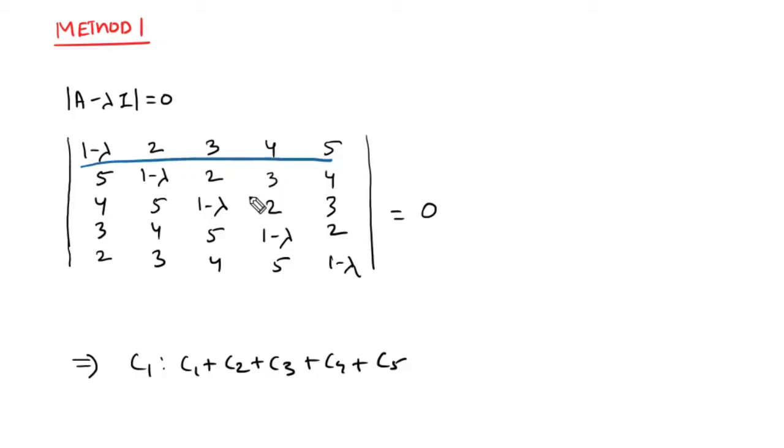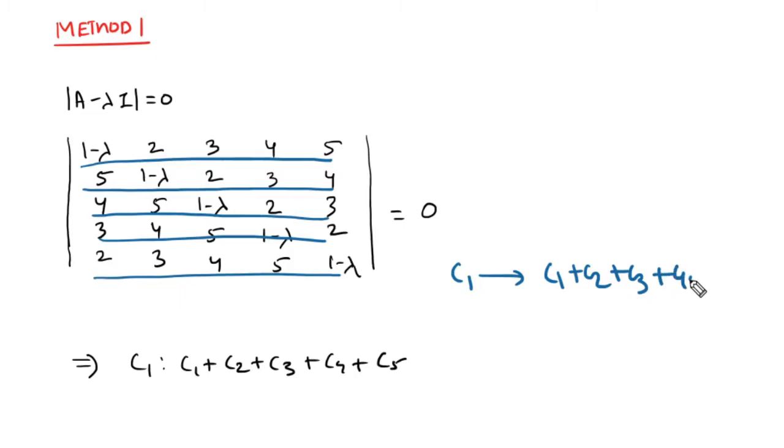If you observe this determinant carefully, see row 1. Row 1 has elements 1 minus lambda, 2, 3, 4, and 5. Row 2 has the same elements: 1 minus lambda, 2, 3, 4, 5. Next row same, next row same, same. So here comes the trick of determinant. If you change column 1, like column 1 plus column 2 plus column 3 plus column 4 plus column 5, the determinant value does not change. That is a very important property of determinant.